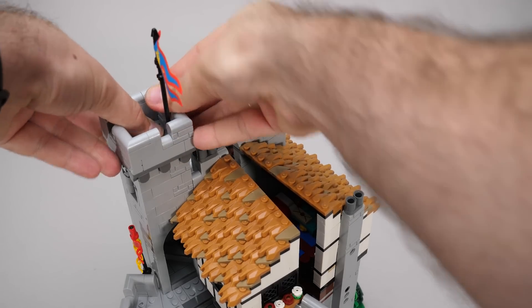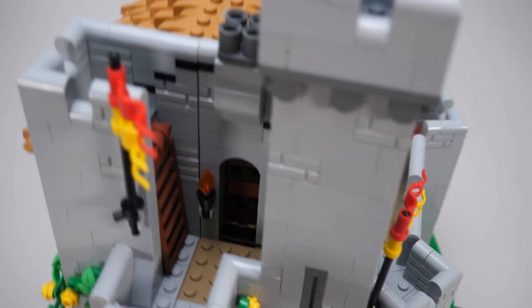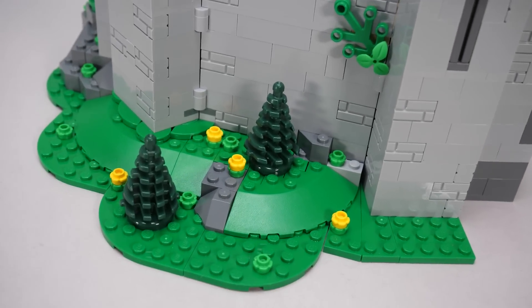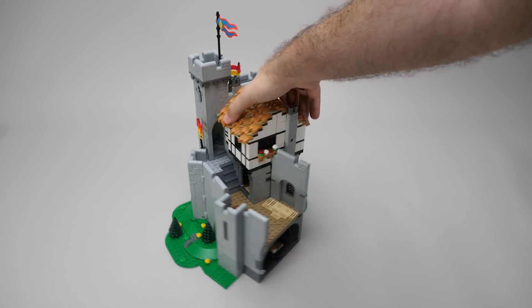The top of the tower gets in place with the flags, we have more of them placed all around the build. We have some small pine trees in dark green, this is actually a new color for them. And this is how our build looks like at the end of the first manual.